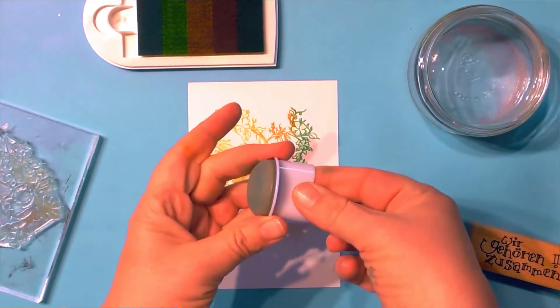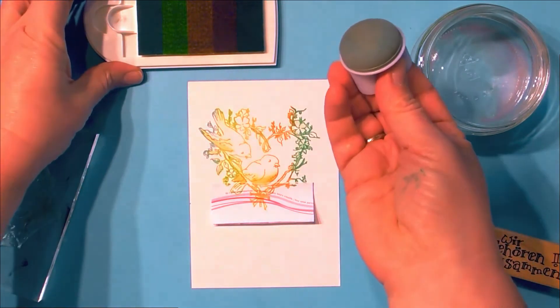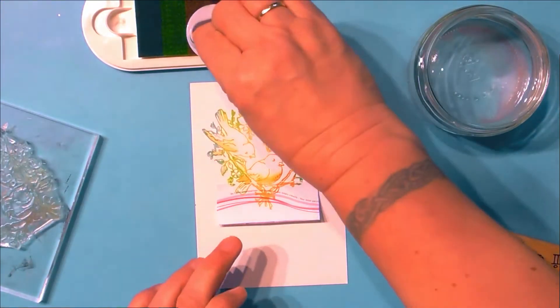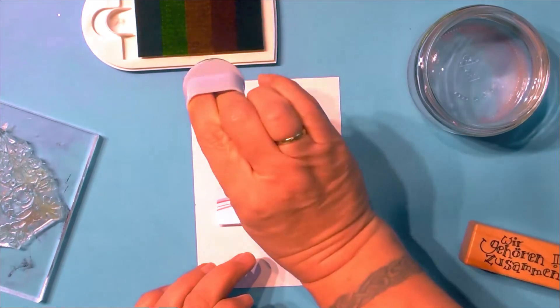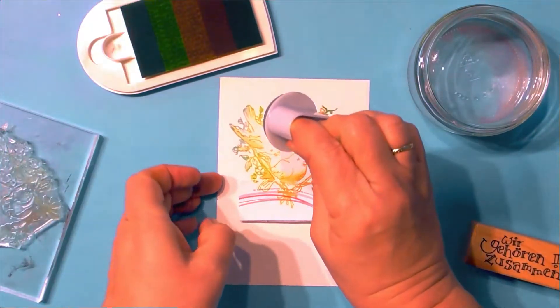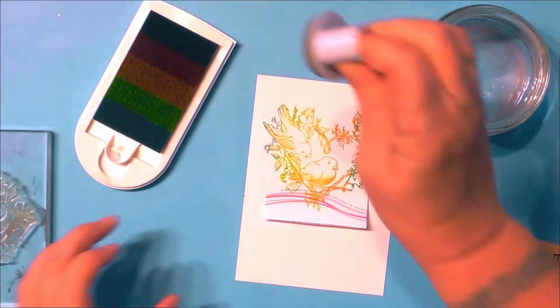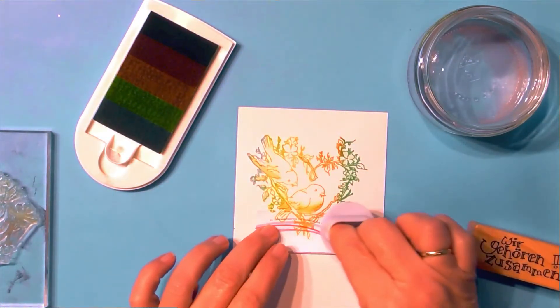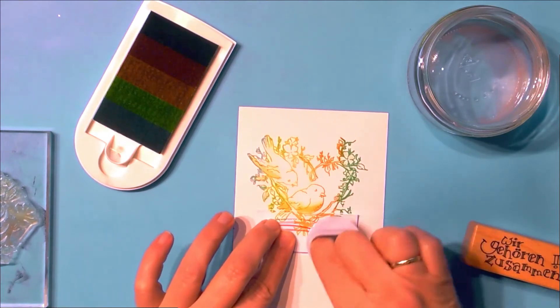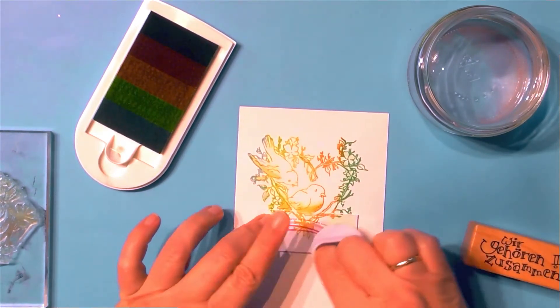Now use your Jumbo Dauber and pick up some of the ink from the Kaleidacolor stamp pad and create a kind of shadow around this post-it note to create a dimensional shadowy look for the sentiment that we will add later.